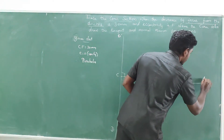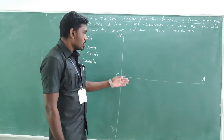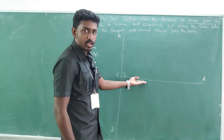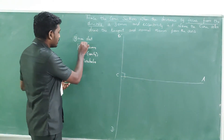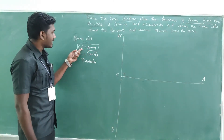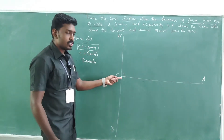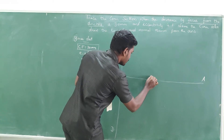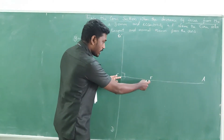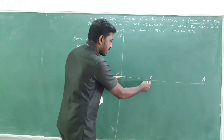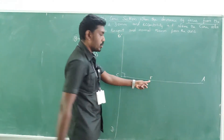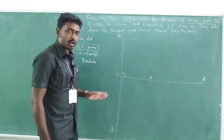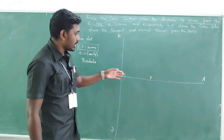This 90-degree line is the axis. Now, to point out the focus on the axis: we have the measurement from the directrix, which is given as 30 mm. Take your scale from point C, measure 30 mm in the horizontal direction, and mark the focus point F.